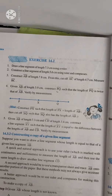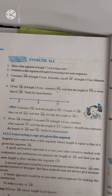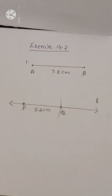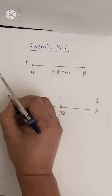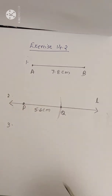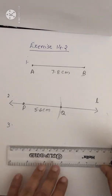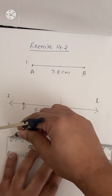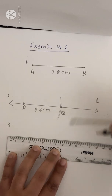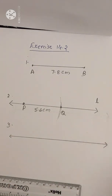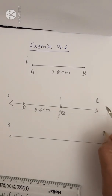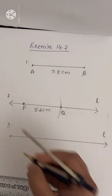Next we will do question number 3: Construct AB of length 7.8 cm. From this cut off AC of length 4.7 cm, then measure BC. First what you have to do is draw a line L and draw two arrows at the ends to show that it is a line.